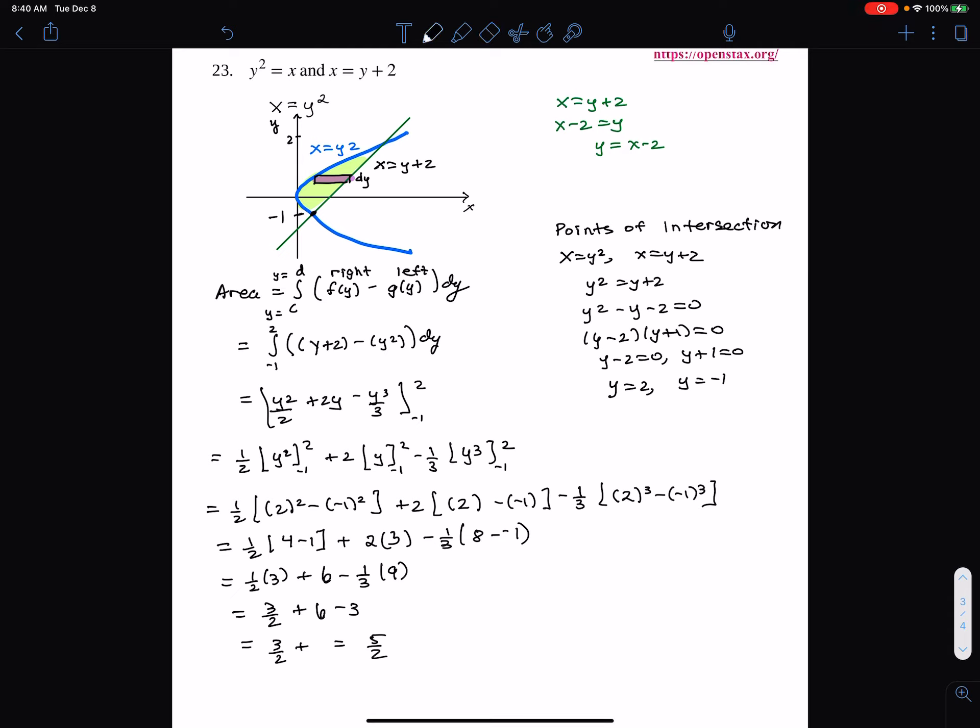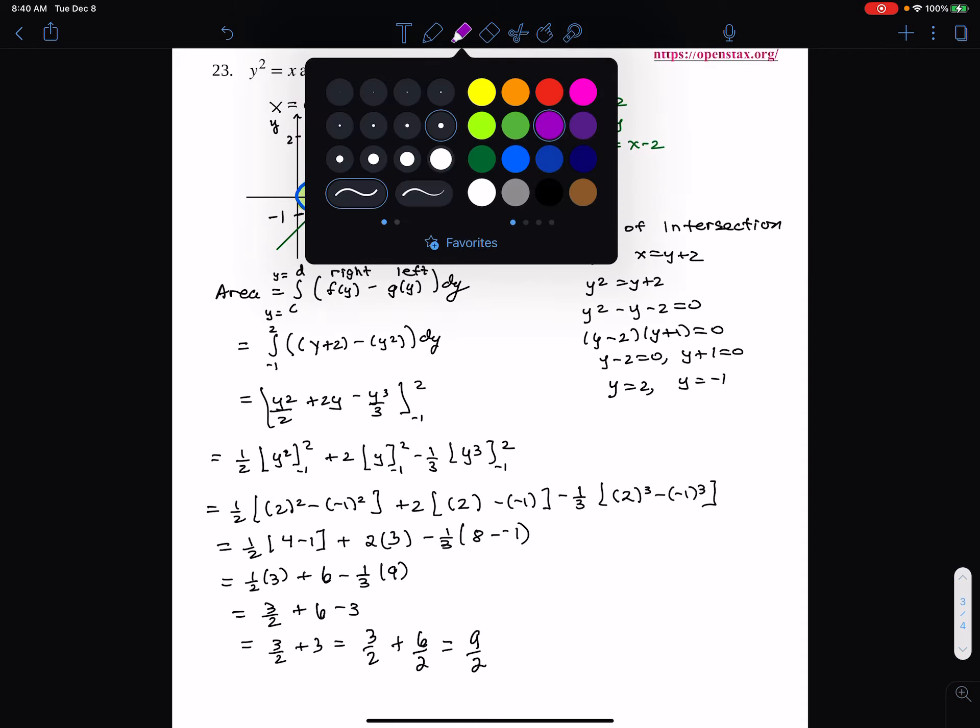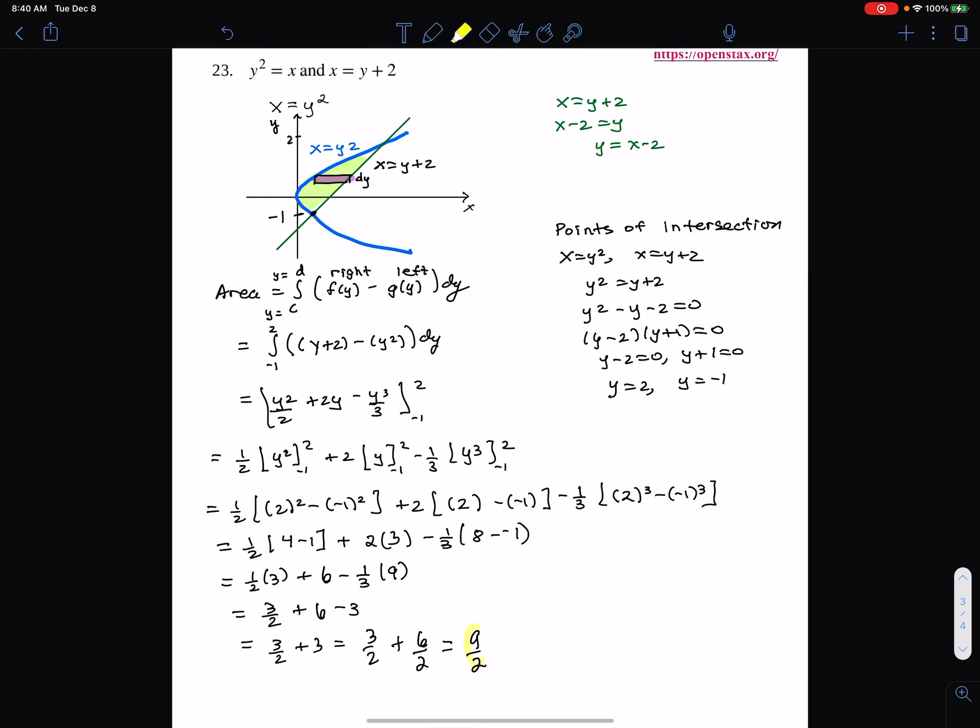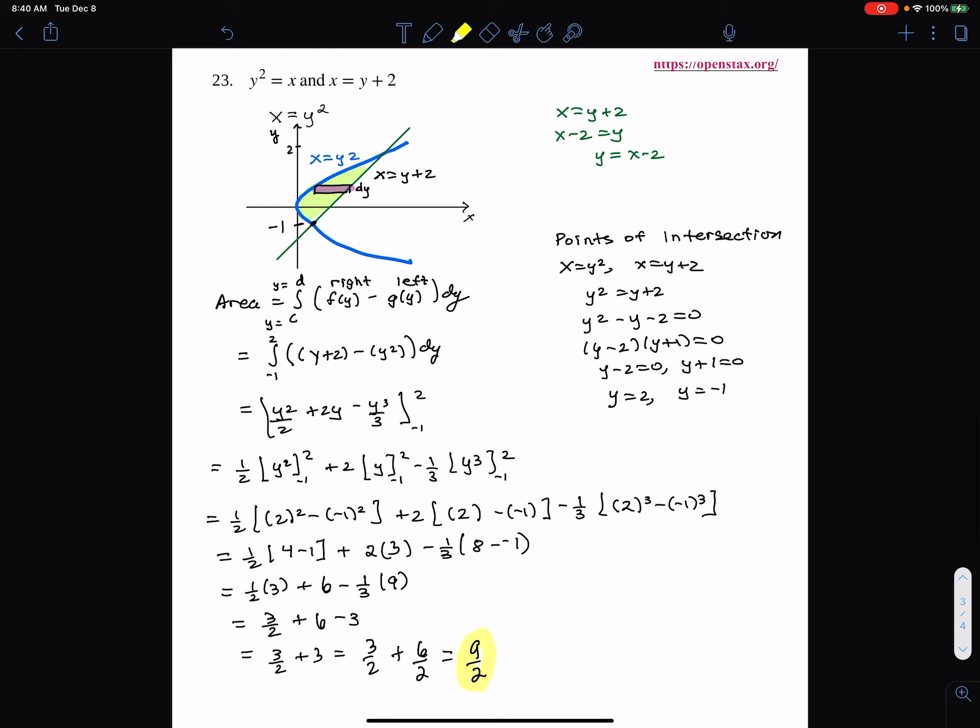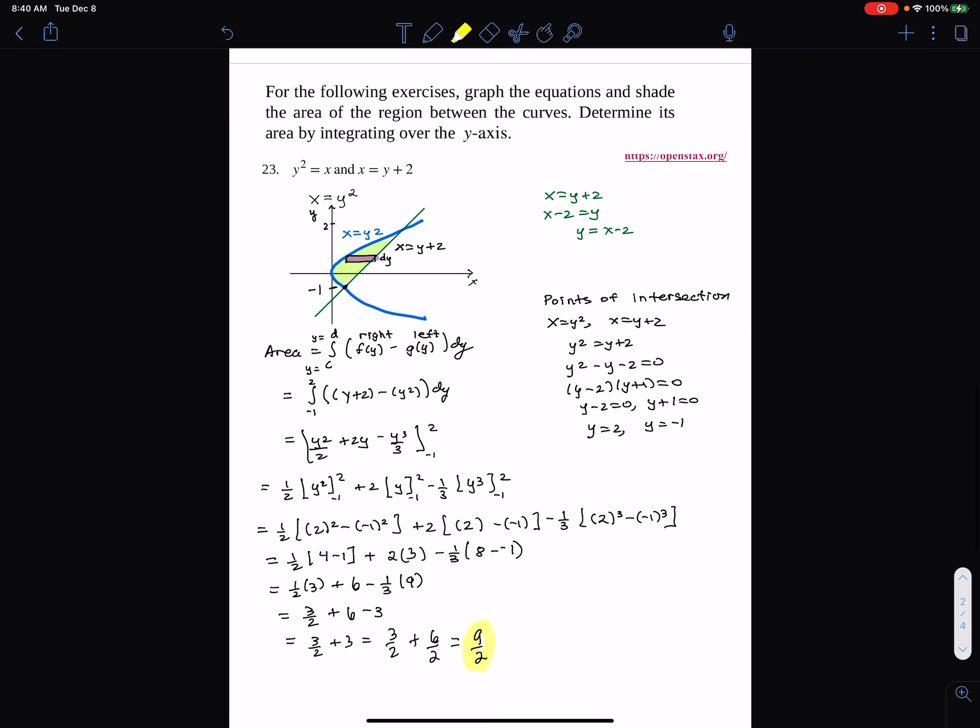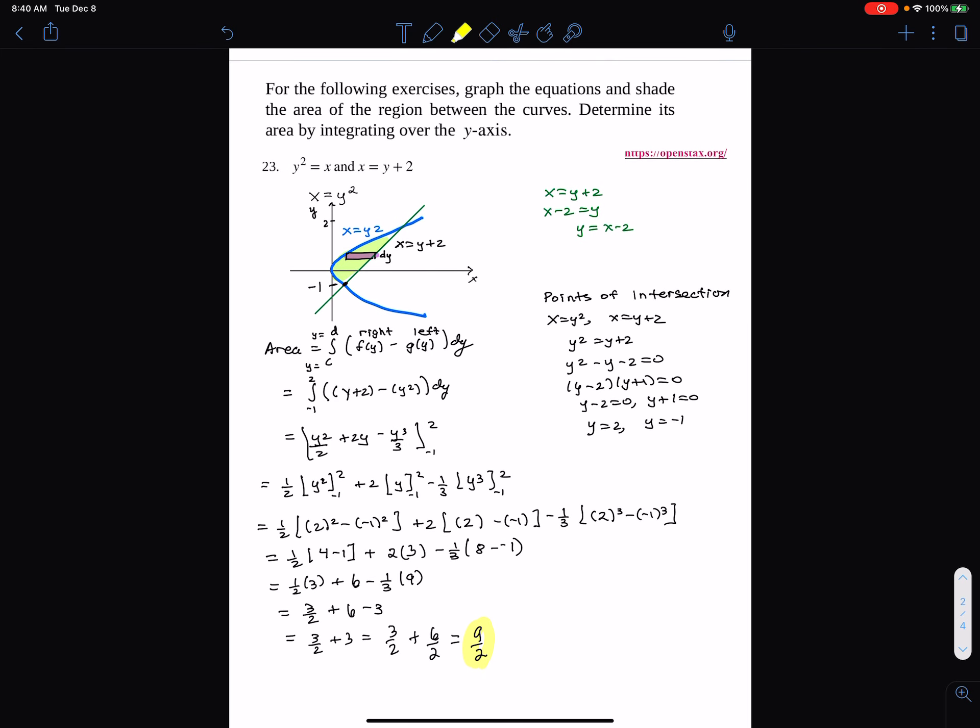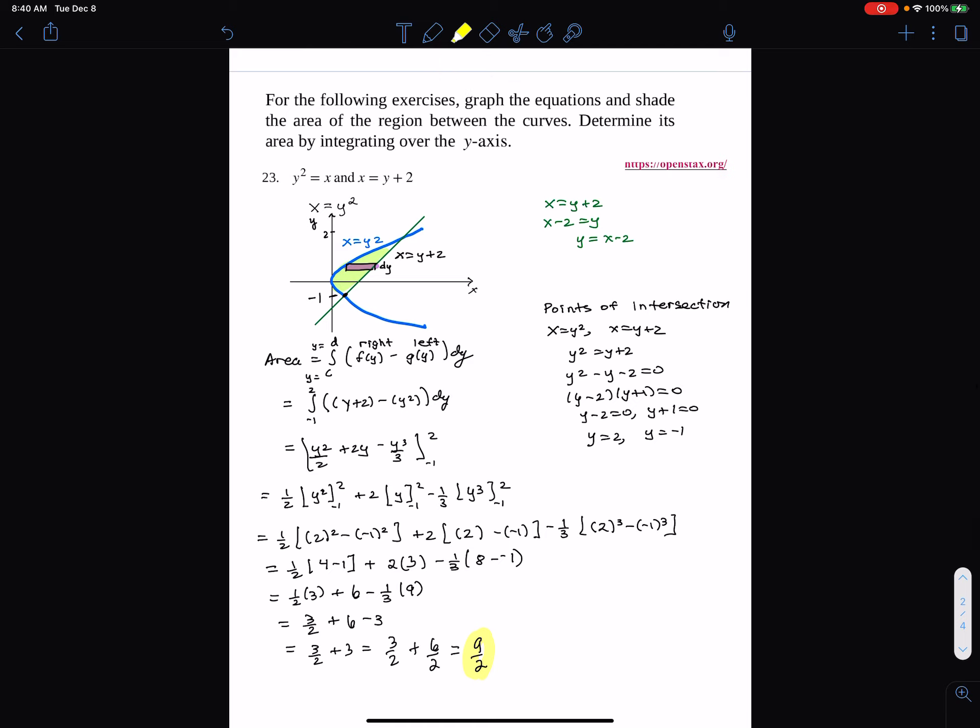So three plus three halves. I had a feeling I was going to make a little thing like that at the very end. I had a feeling I would do that. It would have been way better if I hadn't made that mistake. But anyway, there we go. So the mistake was two minus negative one. That's three. I'm just going to still post this video with the human side here that I made a mistake. And you can see that.